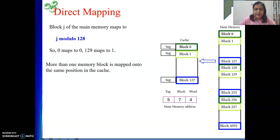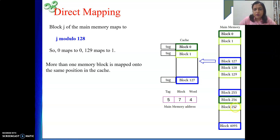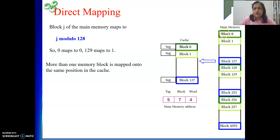The big point here is: suppose block 0 is present in the cache memory, and at some time we require data from block 256. Block 256 will not be there in the cache. Why? Because 256 and block 0 have the same position in the cache. In one position, only one block can be there at a time, so right now block 0 is there, meaning block 256 will not be there.